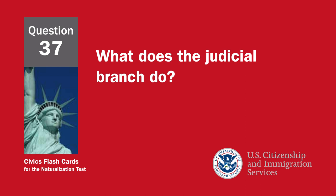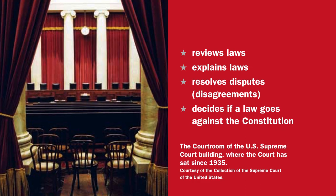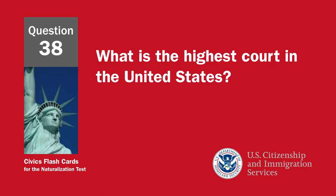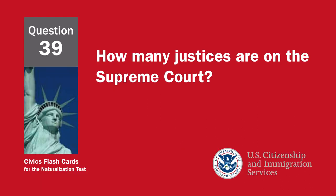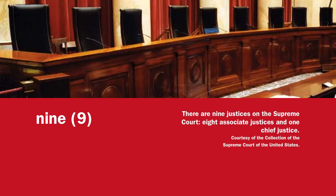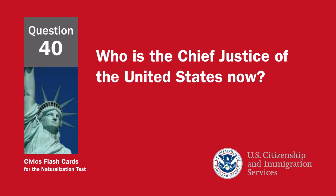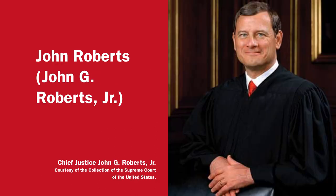What does the judicial branch do? Reviews laws, explains laws, resolves disputes and disagreements, and decides if a law goes against the Constitution. What is the highest court in the United States? The Supreme Court. How many justices are on the Supreme Court? Nine. Who is the Chief Justice of the United States now? John Roberts.